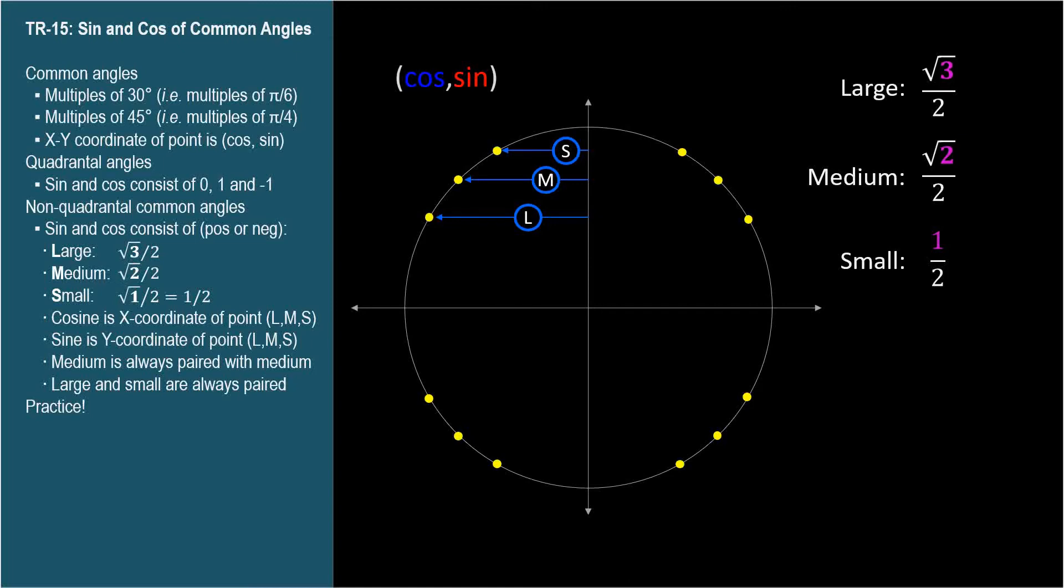The cosine of one-twenty degrees is the small number, one half, but the x-coordinates over here in quadrant two are negative. So the cosine of one-twenty degrees is negative one half.